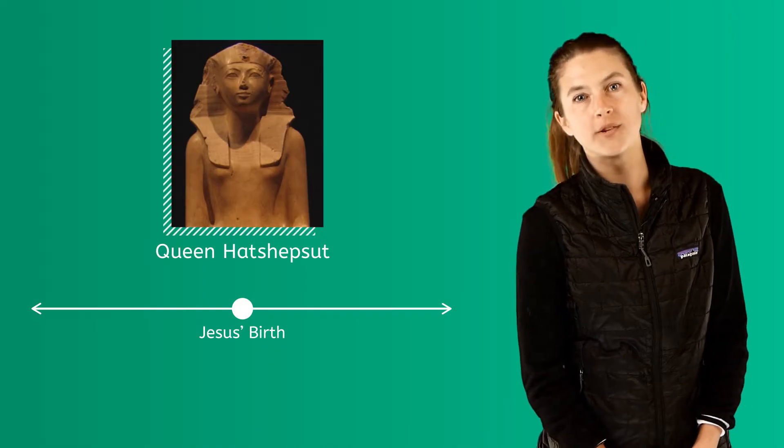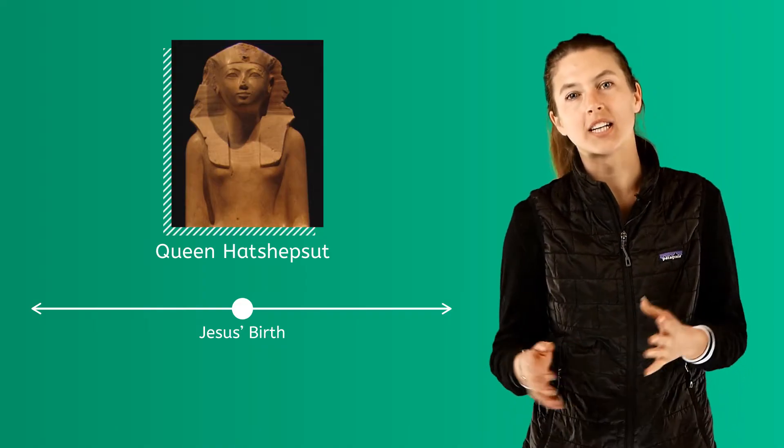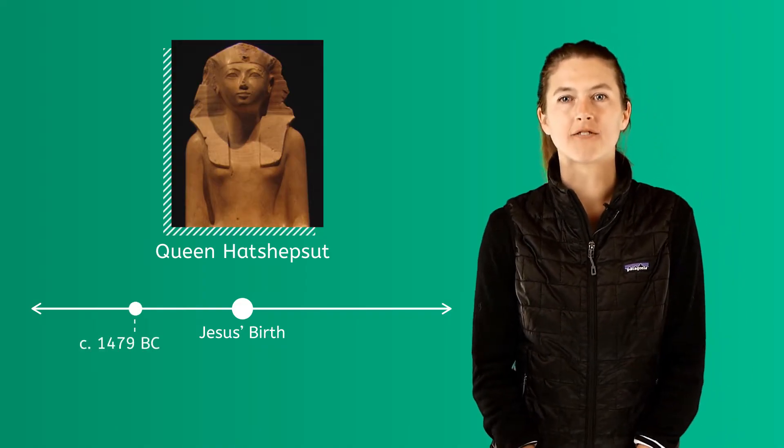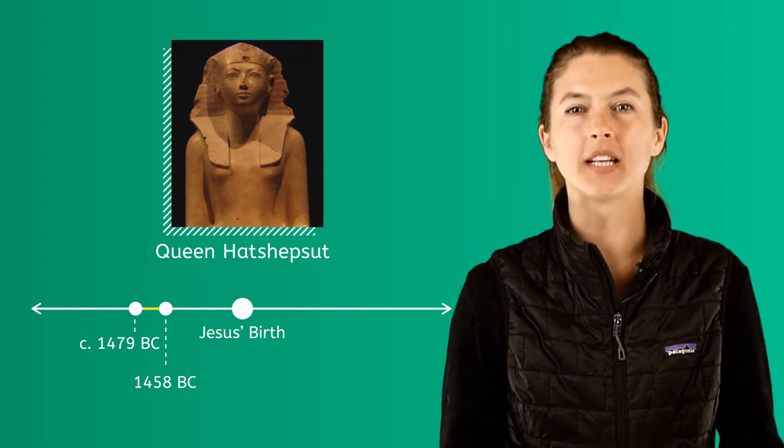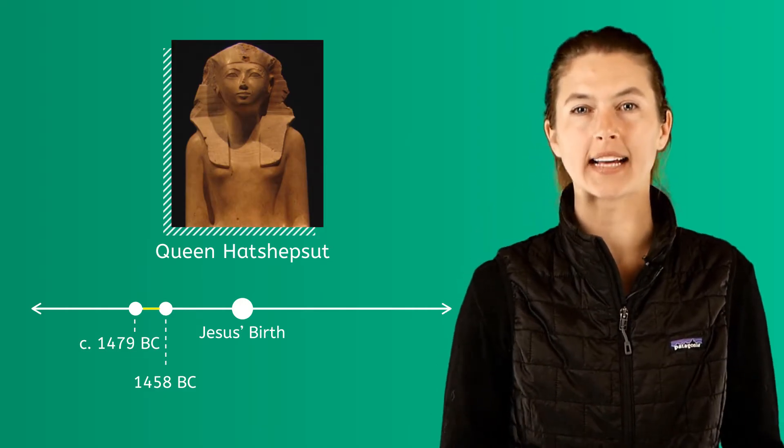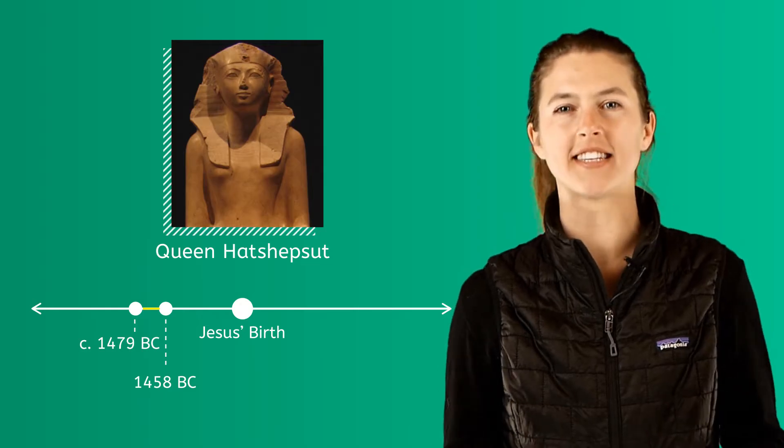Hatshepsut ruled for about 20 years, from circa 1479 BC to 1458 BC. She organized military campaigns and sent out trade expeditions to bring exotic goods to Egypt.